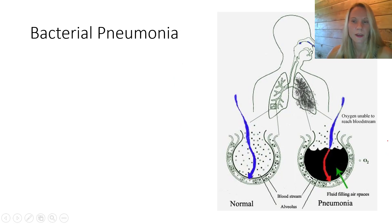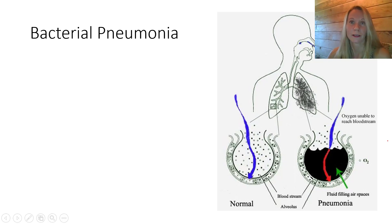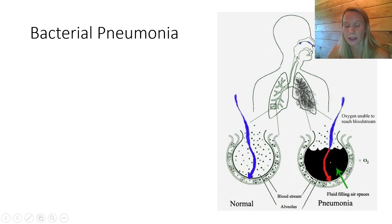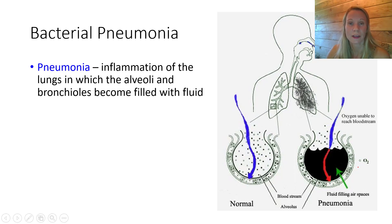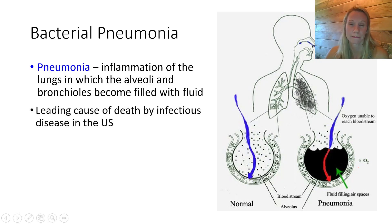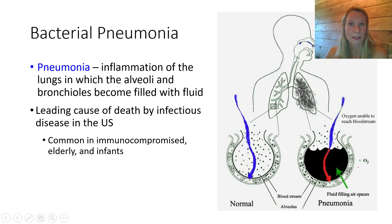Now let's talk about bacterial pneumonia. The alveoli are little air sacs at the tips of our bronchioles, only one cell thick, aligned with capillaries to facilitate gas exchange. We don't want the alveoli filled with fluid, because that minimizes gas exchange. If fluid gets into the alveoli, we have pneumonia — inflammation of the lungs. Pneumonia can be caused by viruses or bacteria; we're focusing on bacterial pneumonia, the leading cause of death by infectious disease in the United States.